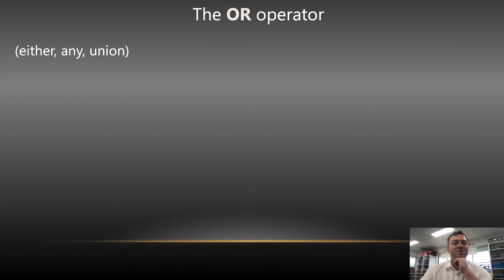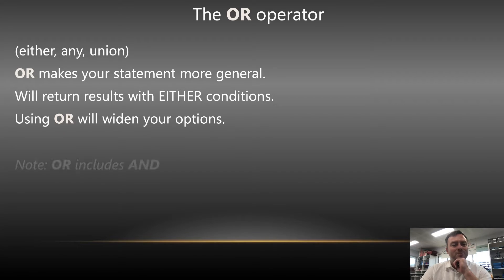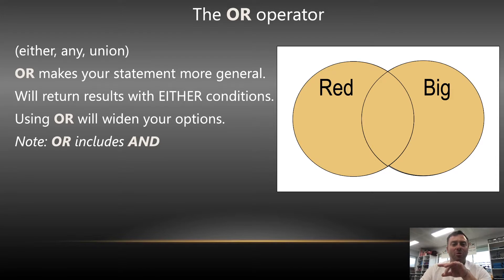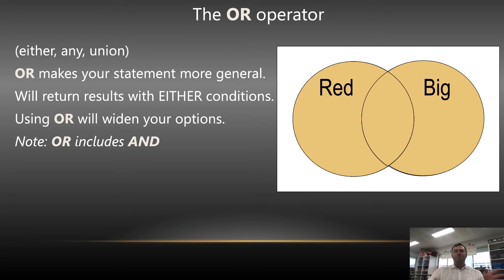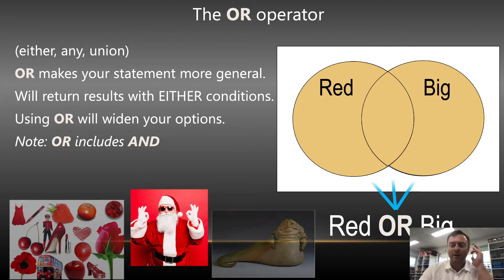So with the OR operator it's a little bit different — this is the union, this is when you bind things together. This will return results if either of the conditions are true, so using OR will widen your options. And then this is really important: OR includes AND, so that overlap in between. It's really important — when we say OR, it doesn't mean exclusive OR. So if you get the hamburger OR the fries, there are four options: you don't get anything, you get just the fries, you get just the hamburger, or you get both — you would be happy. That's a little bit different for people to understand.